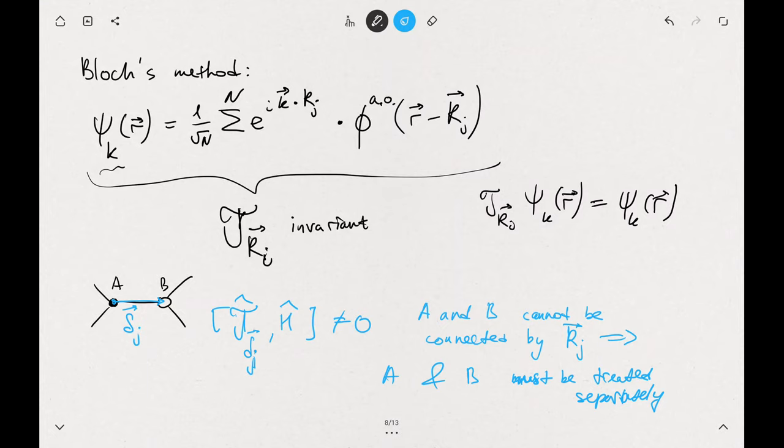This means that A and B must be treated separately. This Bloch method is basically the requirement that τ_ri commutes with the Hamiltonian.